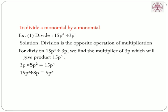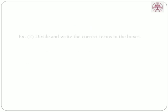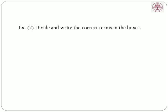Therefore, dividing 15p cubed by 3p, the answer is 5p squared. Next: divide and write the correct terms in the boxes. Minus 36x raised to 4 divided by minus 9x — minus 36 divided by minus 9 is 4, and x raised to 4 divided by x is x cubed. Therefore, minus 36x raised to 4 divided by minus 9x is equal to 4x cubed.